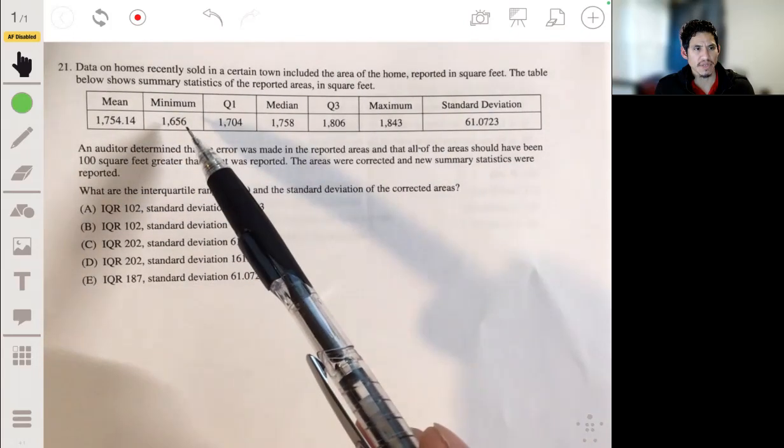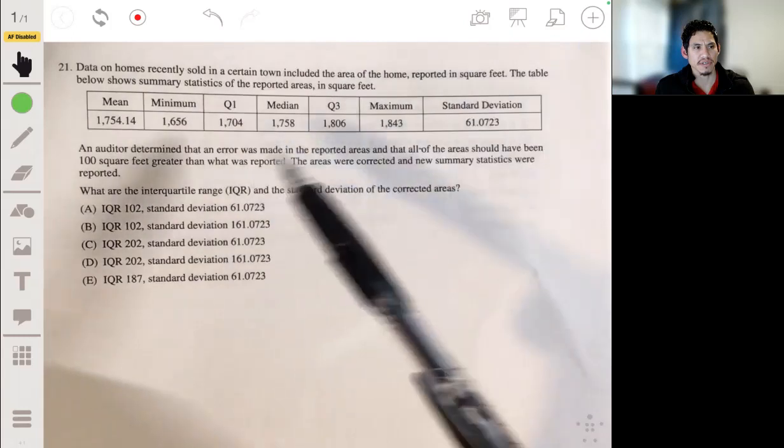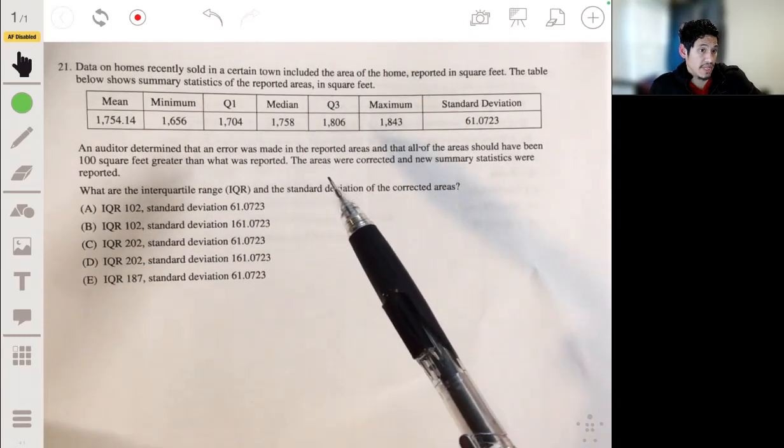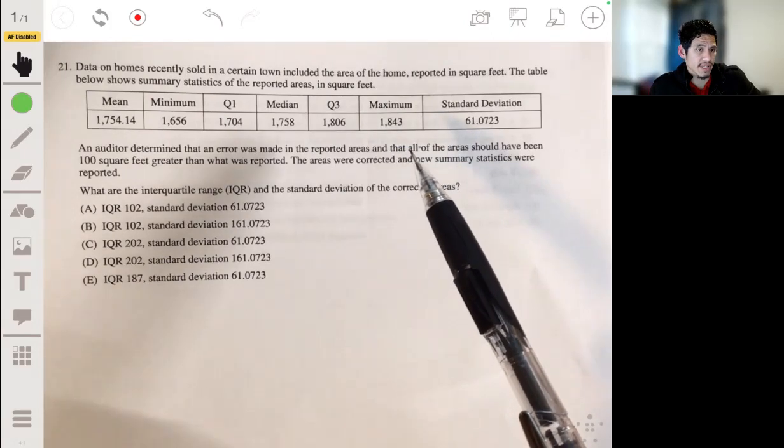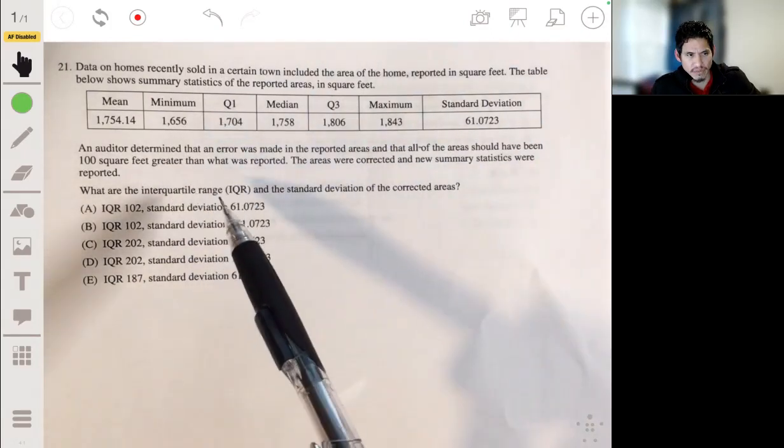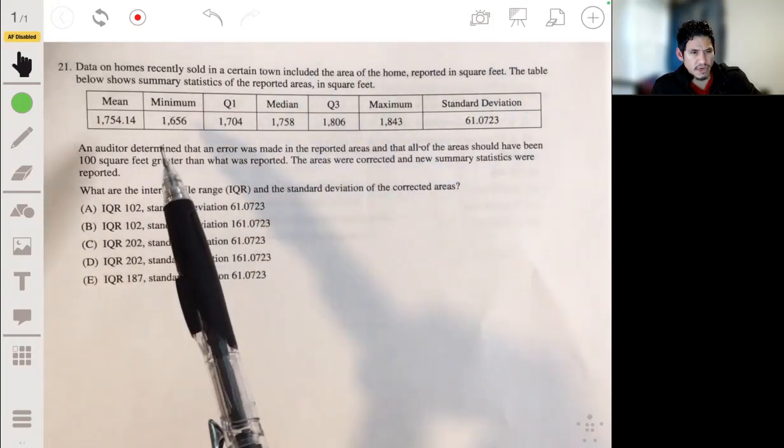Table below shows summary statistics of the reported areas in square feet. Here we've got the mean, the minimum, Q1, median, Q3, maximum, standard deviation. An auditor determined that there was an error that was made in the reported areas and that all of the areas should have been 100 square feet greater than what was reported. The areas were corrected and new summary statistics were reported.